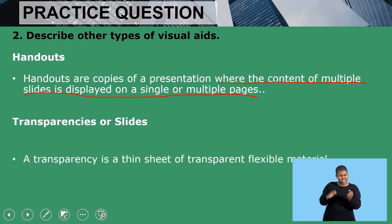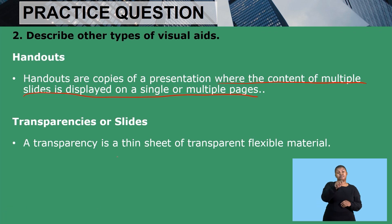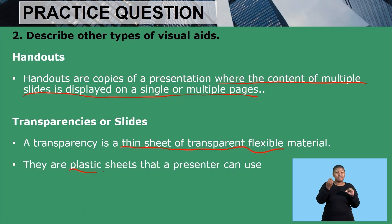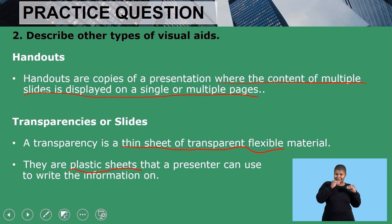Then we have transparencies or slides. A transparency is a thin sheet of transparent, flexible material — it's not paper but a plastic sheet that a presenter can write information on. It is used with an overhead projector, whereby whatever is written on the plastic sheet is projected on the wall so that the audience can see what is written on the transparency.